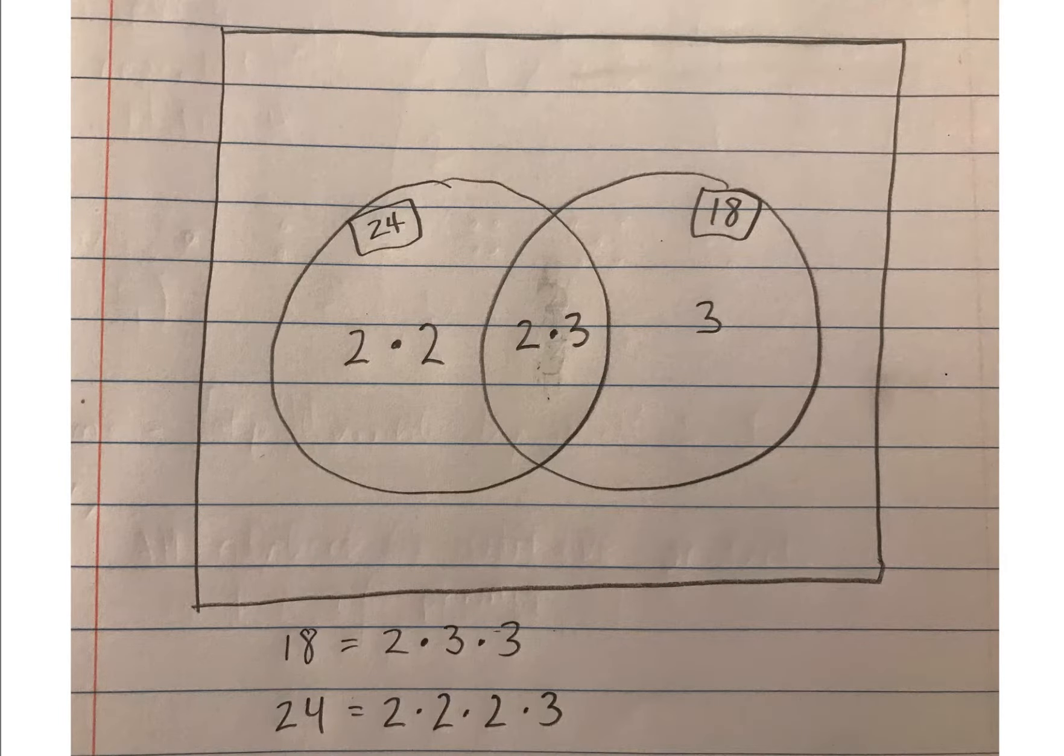I also want to show a different way of doing this which is with prime factors. If we take a look at the prime factorization of 18, it is 2 times 3 times 3. The prime factorization of 24 is 2 times 2 times 2 times 3.